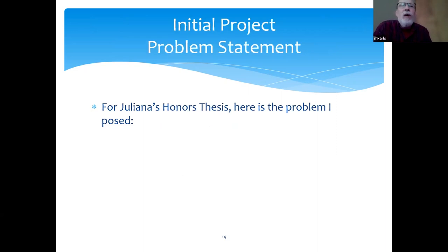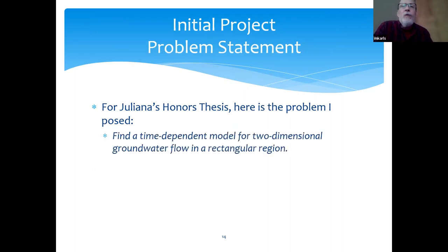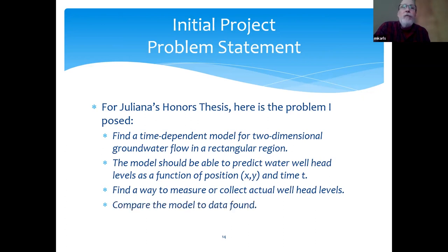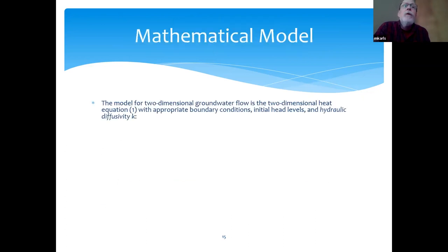Now for Juliana's honors thesis, here's the problem that I posed. What I do when I work with students is I give them a problem to work on. I wanted her to find a time-dependent model for two-dimensional groundwater flow in a rectangular region. The model should be able to predict water wellhead levels as a function of position x, y, and time t. Then find a way to measure or collect actual wellhead levels and compare the model to the data. So the model for two-dimensional groundwater flow is the two-dimensional heat equation, equation 1 we saw above, with appropriate boundary conditions, initial head levels, and hydraulic diffusivity kappa. What I have here is the first equation, that's the groundwater flow equation. These four terms here, that's the head levels on the boundaries. And this term here is the initial head level at every point in the rectangular region at time 0.